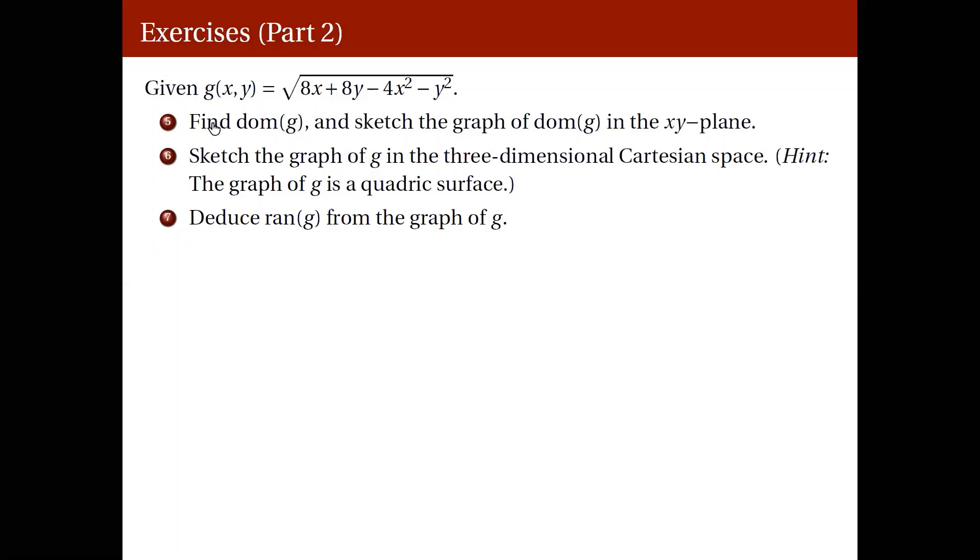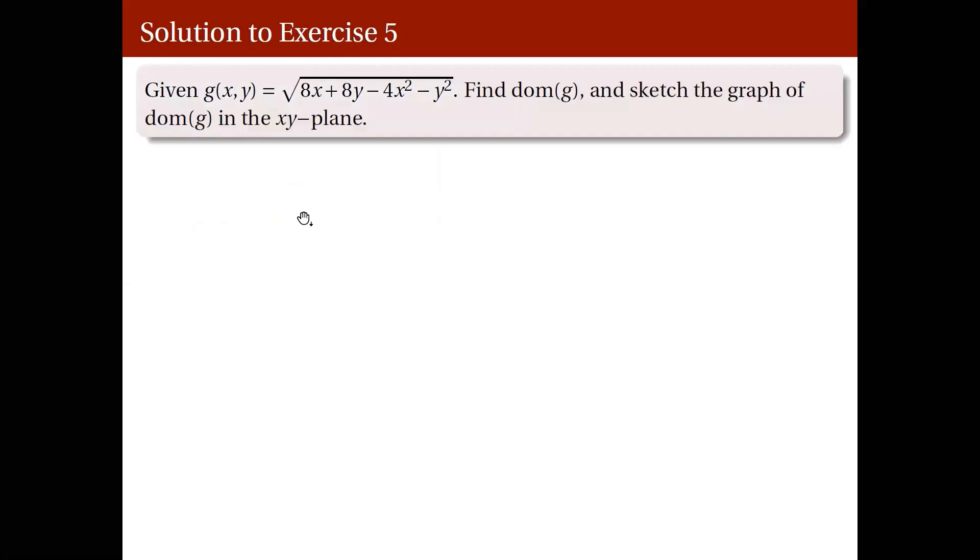So first, let's take a look at finding domains again. Let's try item number five. Given g(x,y) here, we want to solve for the domain of g and draw a sketch in the x,y plane. Let's do that by noting that since we have square roots here, the radicand should be non-negative. And that's going to be the main restriction for your domain of g.